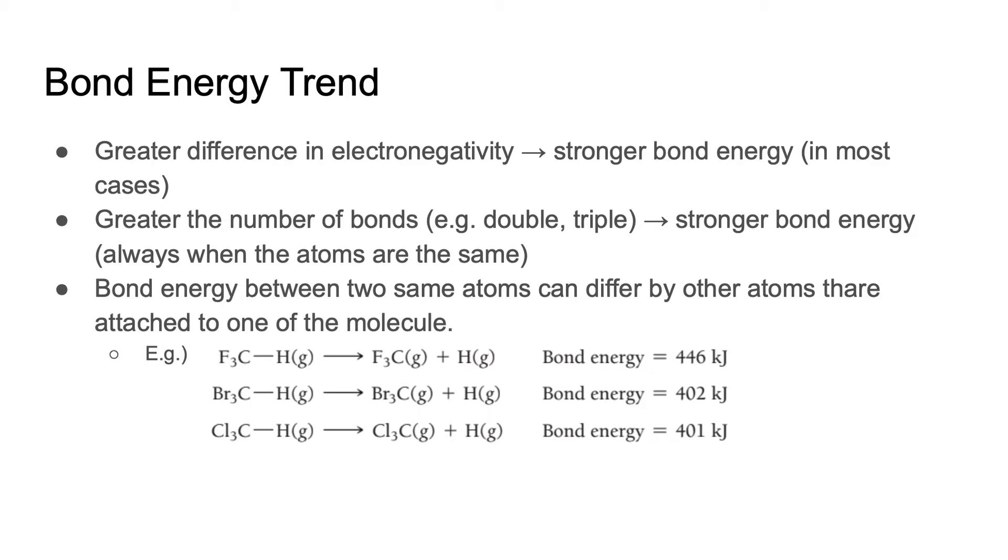A bond energy between two same atoms and same number of bonds can also be different depending on what other atoms are forming. I'll explain using these three equations. You're able to see that all these three molecules have bond CH, but the bond energy to break each of these bonds are different.